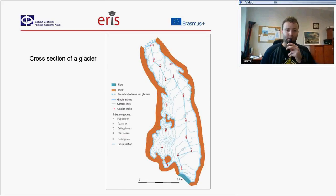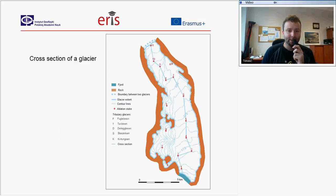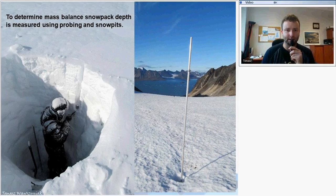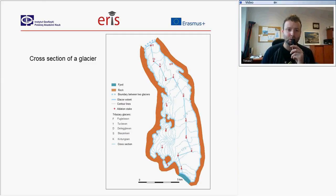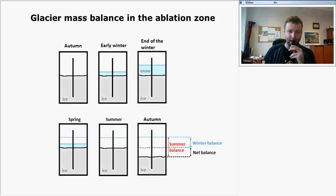In this work package on glaciers, you are asked to draw the cross-section of a glacier. You will find information about snow stakes and ablation stakes, as shown in the picture on the right. You will draw the cross-section using the provided level map. These ablation stakes are used to measure the accumulation and ablation of snow and ice.